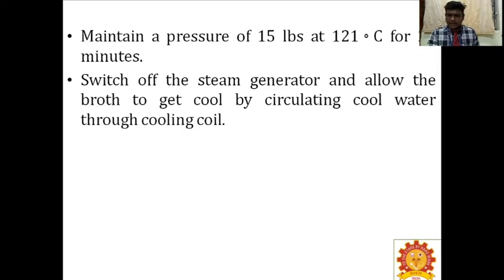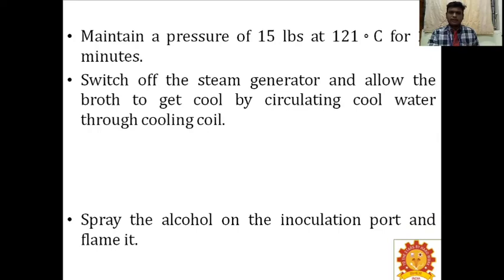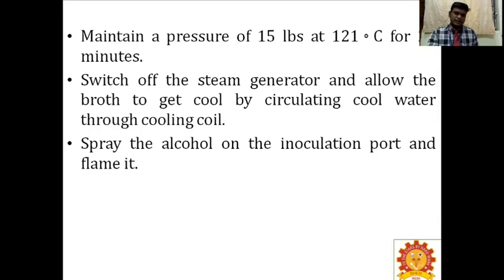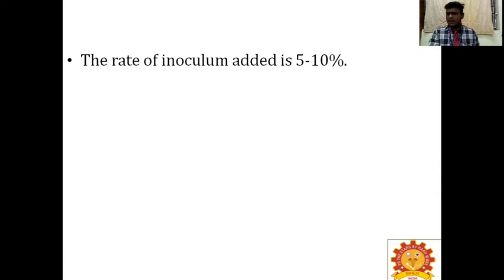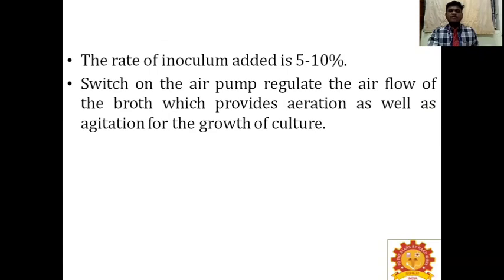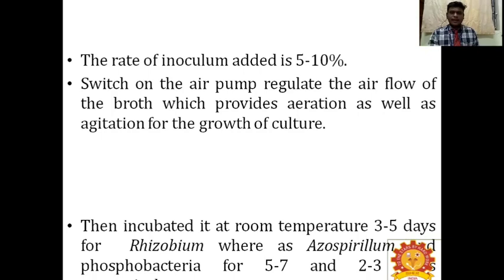Switch off the steam generator and allow the broth to cool by circulating cool water through the cooling coil. Spray alcohol on the inoculation port and flame it. Allow the inoculation port to cool and inoculate the inoculum into the fermenter vessel from the actively grown culture in a 5-liter flask under aseptic conditions. The rate of inoculum added is 5 to 10% — this is the mother culture. Switch on the air pump and regulate the air flow to provide aeration as well as agitation for the growth of culture.